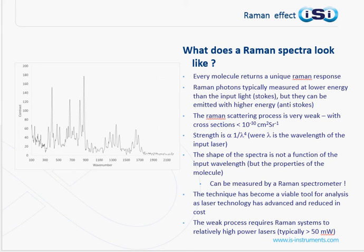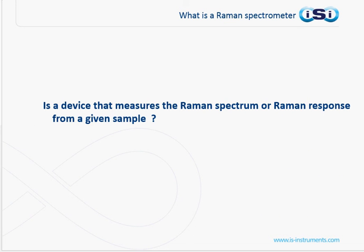The Raman process is weak and typically requires relatively high power lasers of greater than 50 milliwatts. So, what is a Raman spectrometer? It is a device that measures the Raman spectra or the Raman response of a given sample, allowing you to identify or measure properties of its nature.